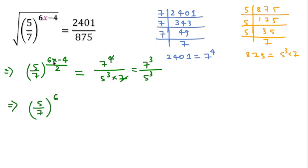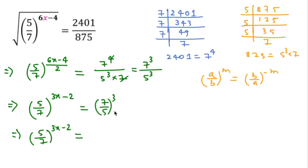Since (6x-4)/2 simplifies to 3x-2, we can write (5/7)^(3x-2) = (7/5)^3. Using the exponent rule that (a/b)^m = (b/a)^(-m), we can write (5/7)^(3x-2) = (5/7)^(-3).